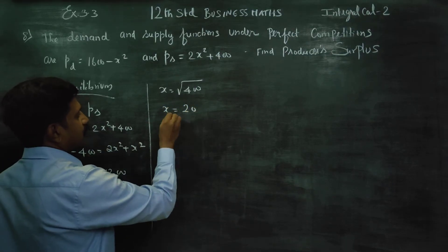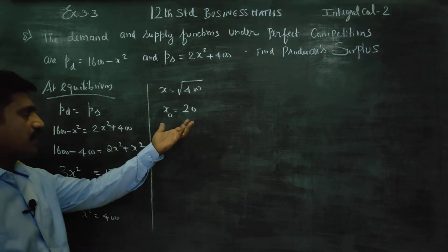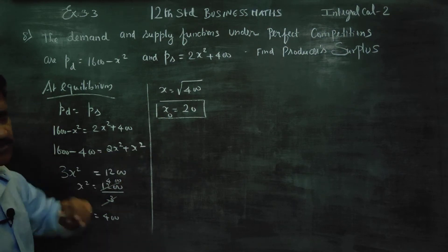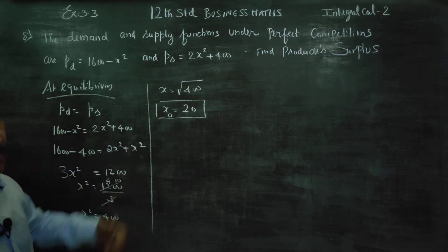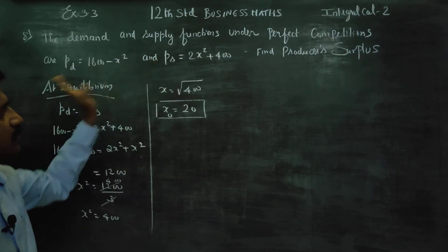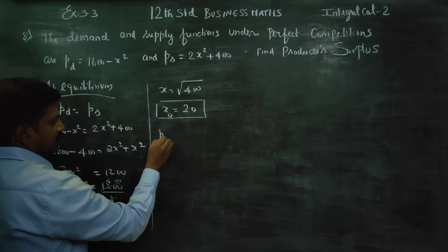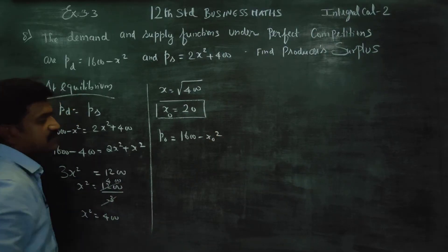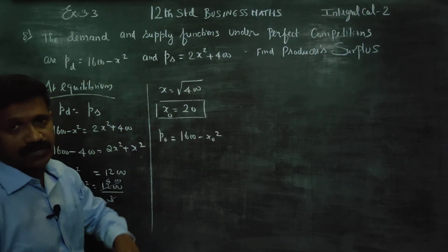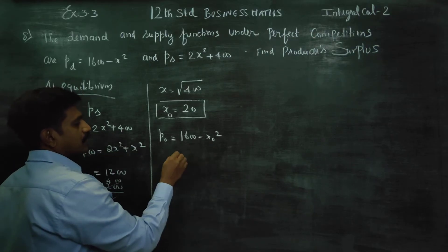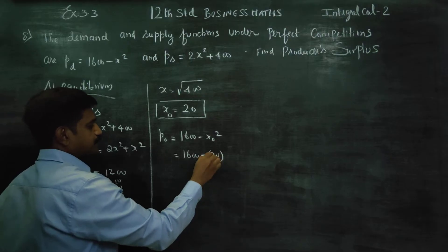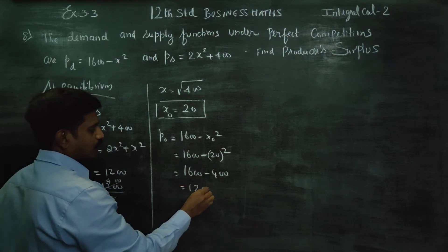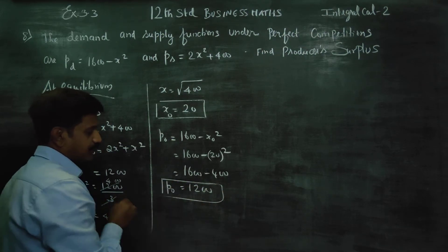The square root of 400 gives x equals plus or minus 20. So x0 equals 20. Then P0 equals 1600 minus 400, which gives P0 equals 1200. The answer for P0 is 1200.